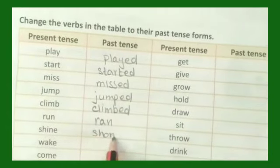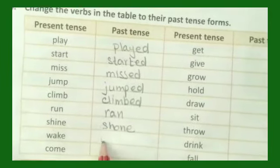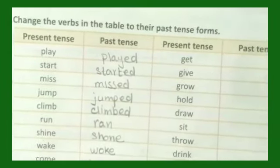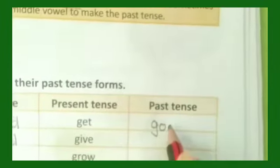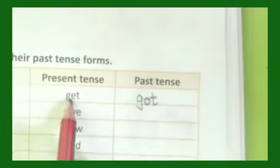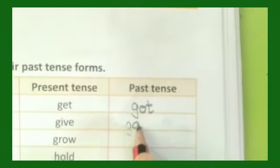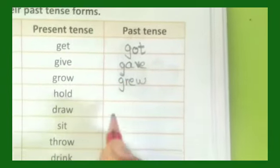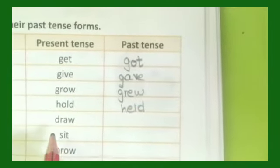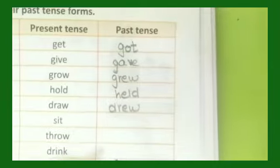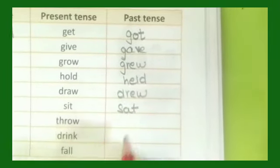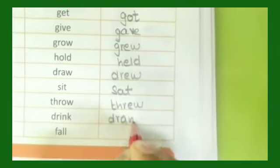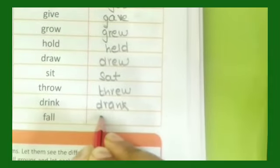Continuing the table: 'Shine' — 'shone'; inside vowel is changed. 'Wake' — 'woke.' 'Come' — 'came.' 'Get' — 'got'; inside vowel is changed. 'Give' — 'gave.' 'Grow' — 'grew.' 'Hold' — 'held.' 'Draw' — 'drew.' 'Sit' — 'sat.' 'Throw' — 'threw.' 'Drink' — 'drank.' 'Fall' — 'fell.'